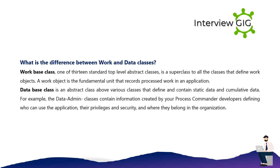What is the difference between work and data classes? The work-base class, one of 13 standard top-level abstract classes, is a superclass to all the classes that define work objects. A work object is the fundamental unit that records processed work in an application. The database class is an abstract class above various classes that contain static data and cumulative data. For example, the data-admin classes contain information about who can use the application, their privileges and security, and where they belong in the organization.